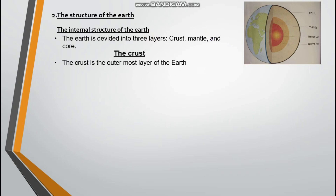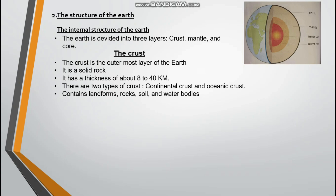Let's discuss the crust. The crust is the outermost layer of the earth. It is solid rock — the crust is where we are standing right now, where we're building our houses. It has a thickness of about 8 to 40 kilometers. There are two types of crust: continental crust and oceanic crust. Continental crust is the rock here in the continent, and oceanic crust is the rock under the sea. The crust contains landforms, rocks, soil, and water bodies like rivers.